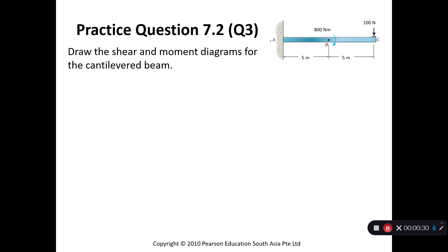The first thing is to calculate the support reaction. Here is a fixed support. If you refer to chapter 5, the table for all the support reactions, you find that fixed supports will have a vertical force. So we have AY, and then there will be AX, and also a moment MA.